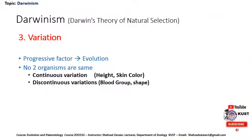The third point of Darwinism is variation. Variation is a slight change or slight difference in something. It is estimated that variation is the progressive factor which leads to evolution. No two organisms are the same; there must be some difference among them. There are two types of variation: continuous variation and discontinuous variation.